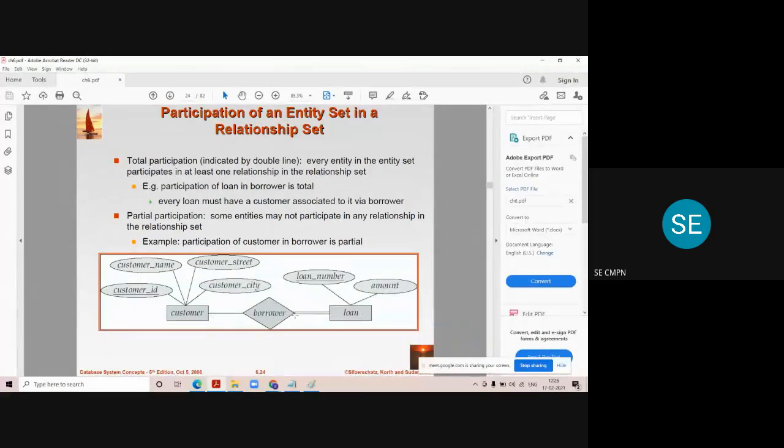Now we'll see the other side of it. What is partial participation? If some entities but not all entities of one entity set participates in the relationship set, that is borrower here in this example, then it is called as partial participation.